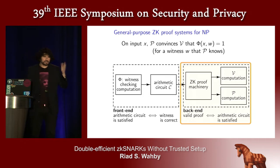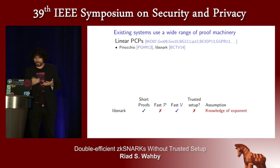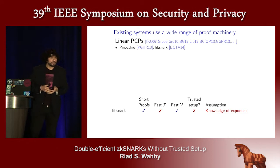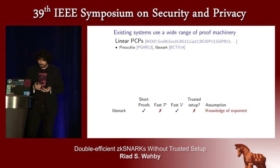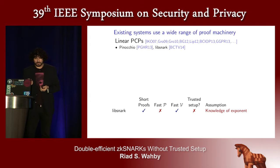So what I'm referring to when I talk about the design space is really this back end machinery. Let's take a look at some existing back ends. The most well-known zero-knowledge proof systems are Pinocchio and LibSnark, which are used essentially in Zcash. These are built on linear probabilistically checkable proofs, and very roughly they give short proofs and fast verification, but proving is slow.